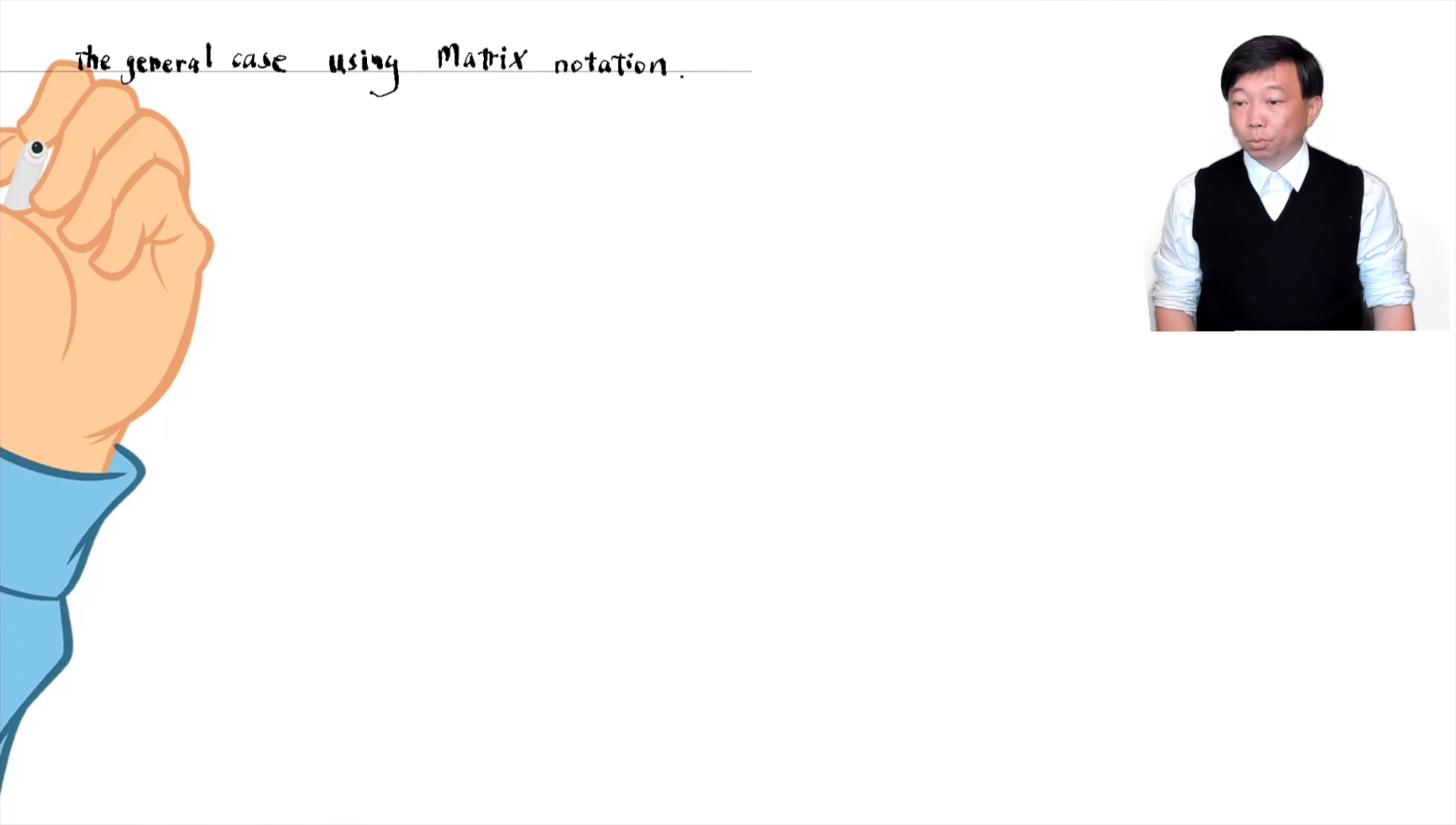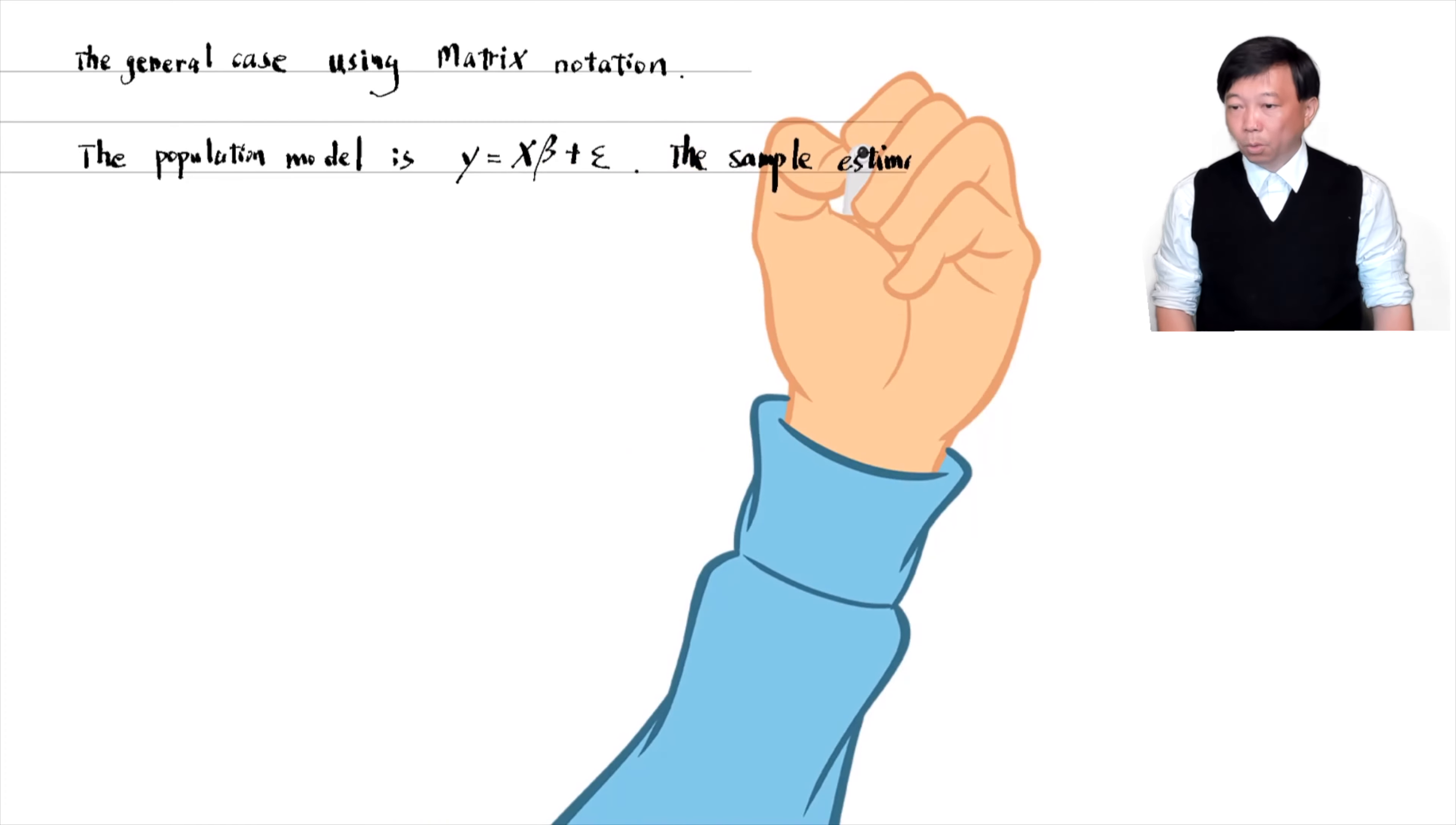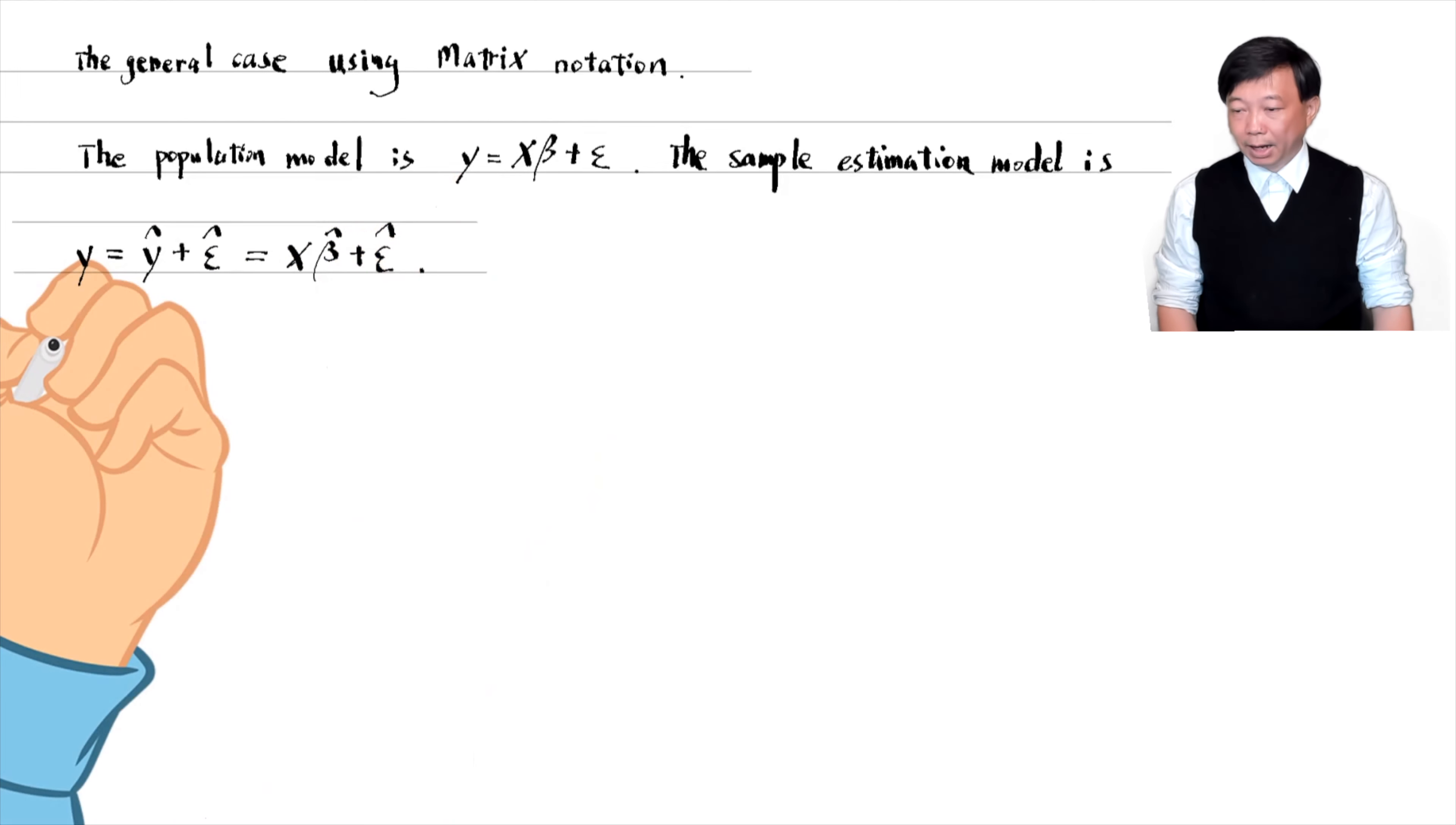The population model is y equals x times beta plus epsilon. The explanatory variable matrix x is an n by k plus 1 matrix. The outcome variable y and the error term epsilon are n by 1 column vectors. The population parameter beta is a k plus 1 by 1 column vector. The corresponding OLS estimation model is y equals x times beta hat plus epsilon hat, where the beta hat is the OLS estimator and the epsilon hat is the residual.